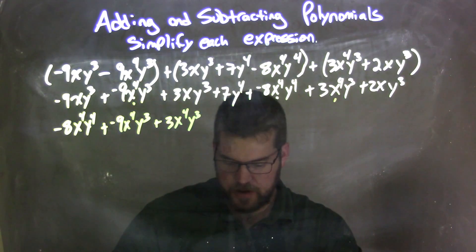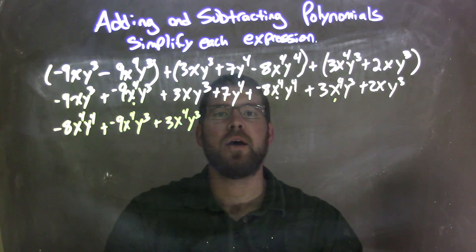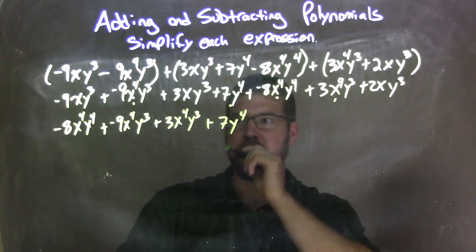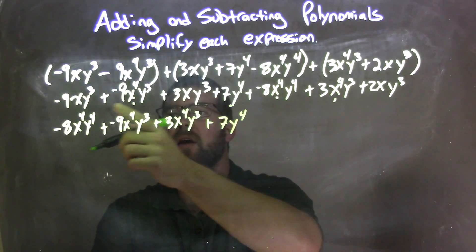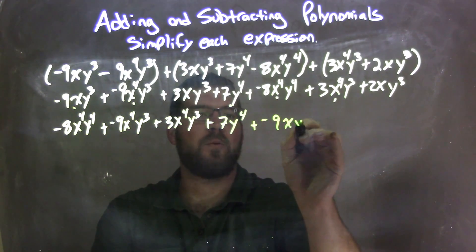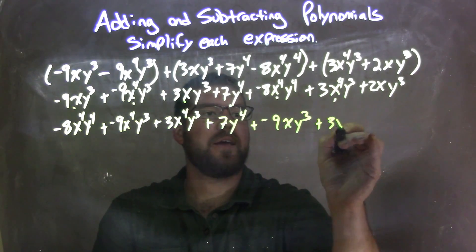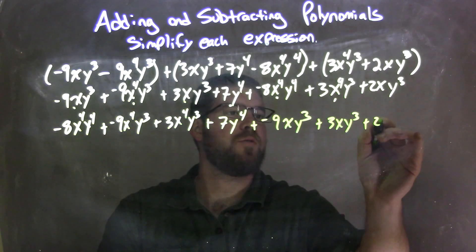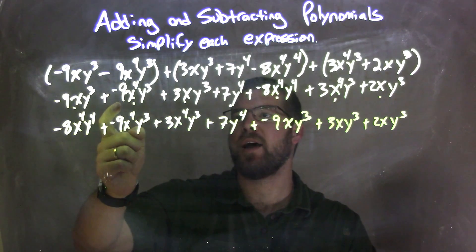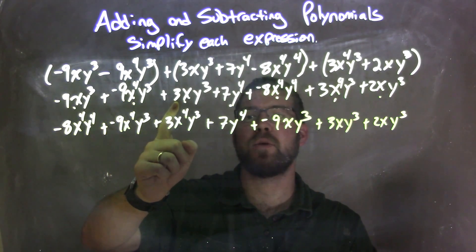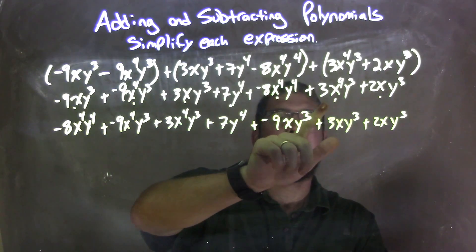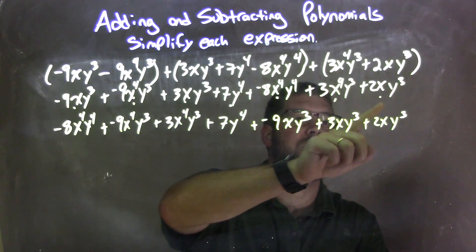Then the next highest one, let's go with my y's, where I have a y to the fourth: plus 7y to the fourth. Then my next highest one, I see xy to the third. So we have plus a negative 9xy to the third, plus 3xy to the third, and lastly plus 2xy to the third. And I should have brought everything down — let's double check. Negative 9xy to the third, negative 9x to the fourth y to the third, plus 3xy to the third, 7y to the fourth, negative 8x to the fourth y to the fourth, 3x to the fourth y to the third, and 2xy to the third.